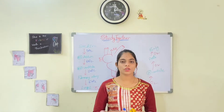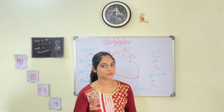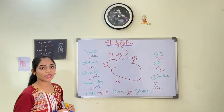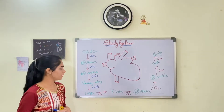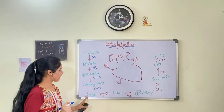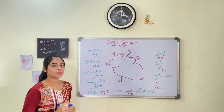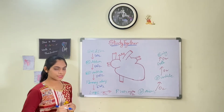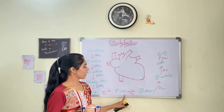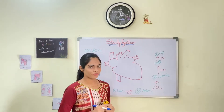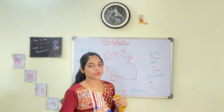In our previous video, we have seen the structure, function and transportation of blood into and from the heart. Superior vena cava and inferior vena cava carry deoxygenated blood from your body parts to the right atrium. Right atrium gives blood to the right ventricle. From there, the deoxygenated blood is carried to the lungs via pulmonary artery. At the level of lungs, gaseous exchange takes place — carbon dioxide is given and oxygen is taken. The pulmonary veins carry oxygenated blood into the left atrium, then into the left ventricle, and from left ventricle it goes into your aorta, which supplies to your whole body.